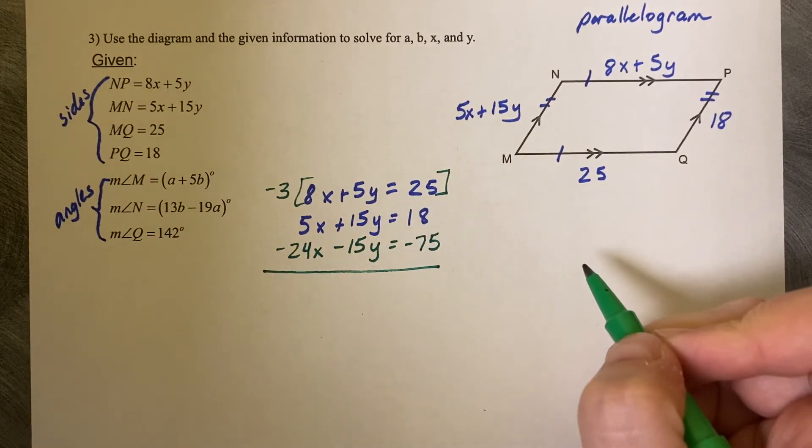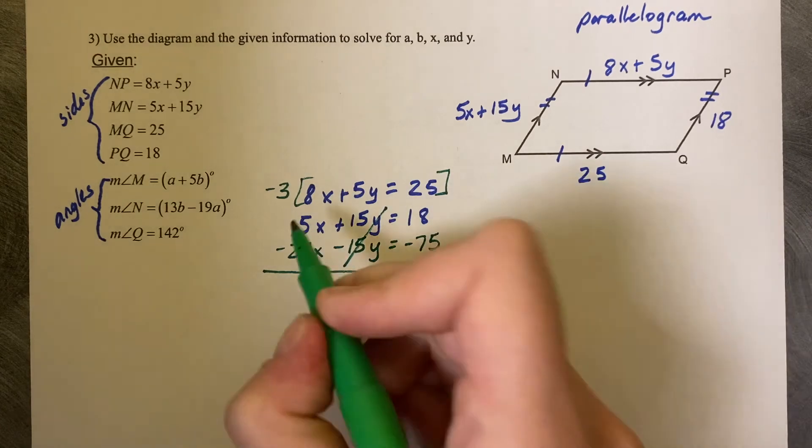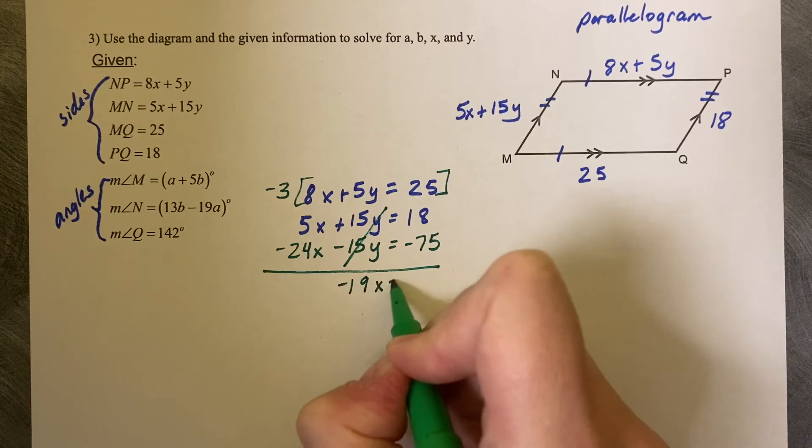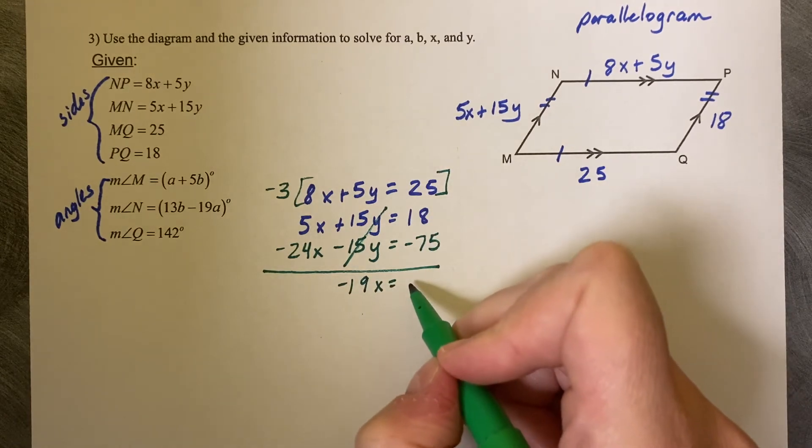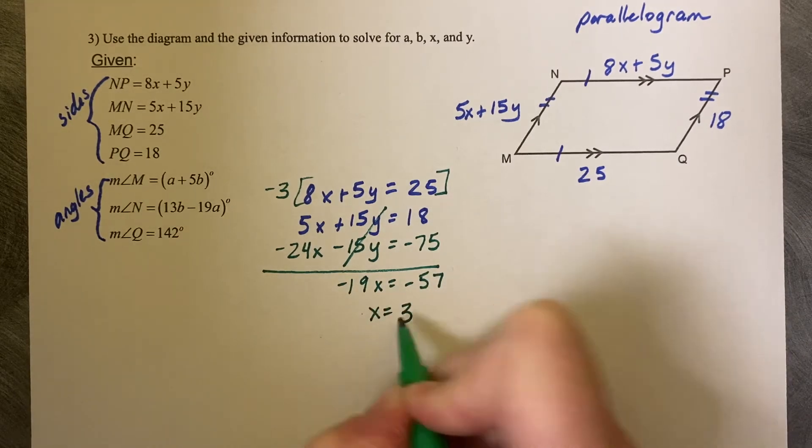And now we can add these equations together. The negative 15 and the positive 15 cancel. 5 plus negative 24 is negative 19X. 18 minus 75 is negative 57. Divide by negative 19 and X equals 3.